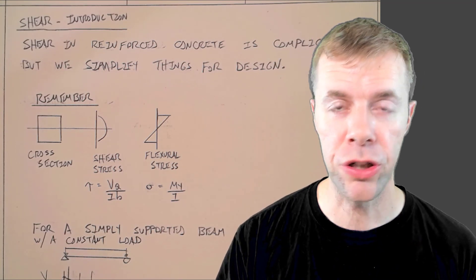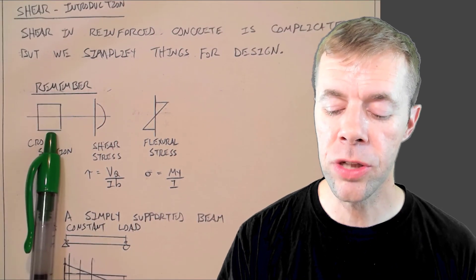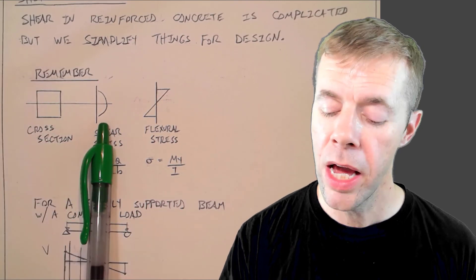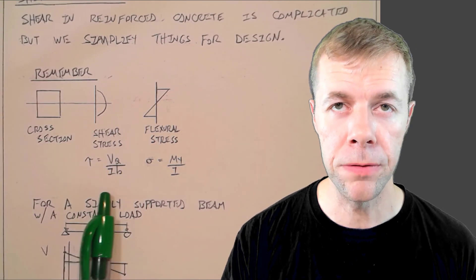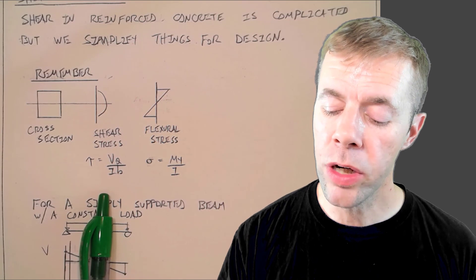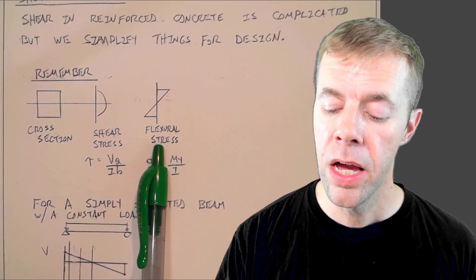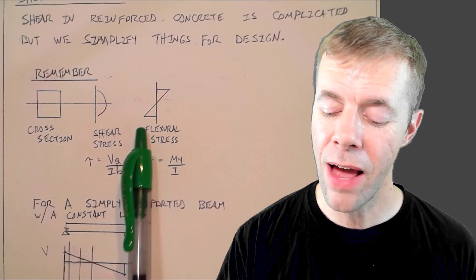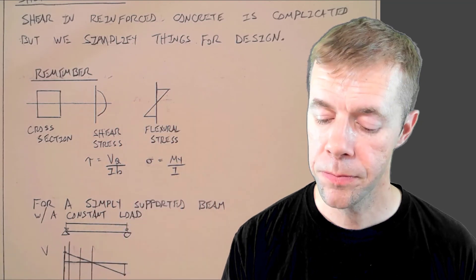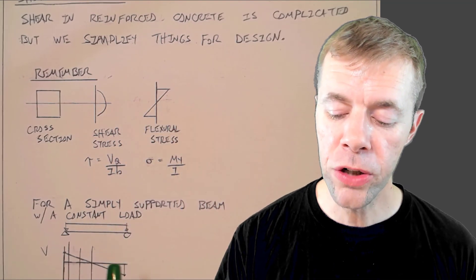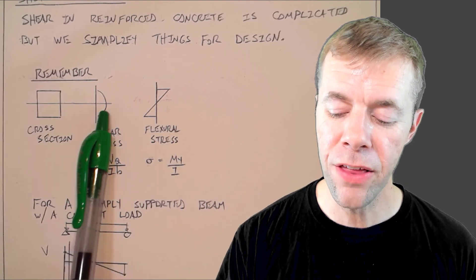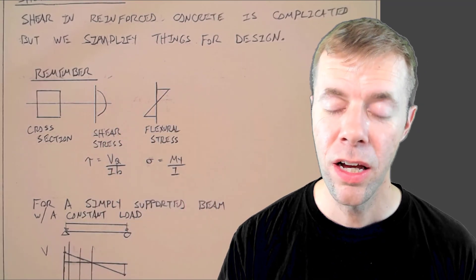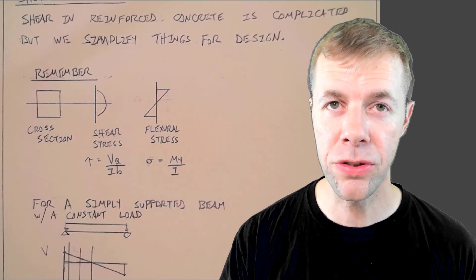Remember, if I had a cross-section and that cross-section is seeing some kind of shear, the shear stresses look like a parabola — we can describe them by this equation. If we look at the flexural stresses, they're highest at the top and the bottom with zero in the middle. Notice where the shear stresses are high, the flexural stresses are low, and where the flexural stresses are high, the shear stresses are low.